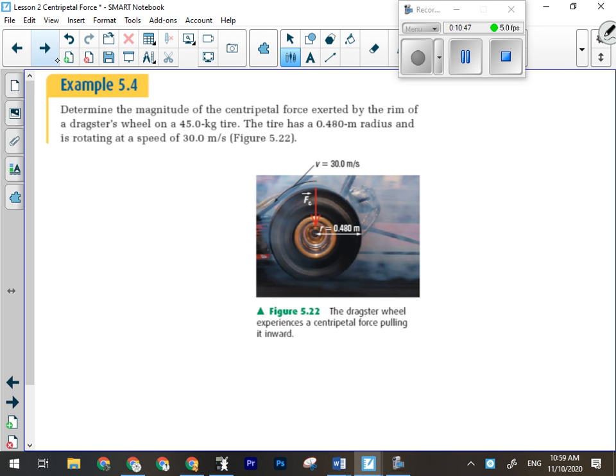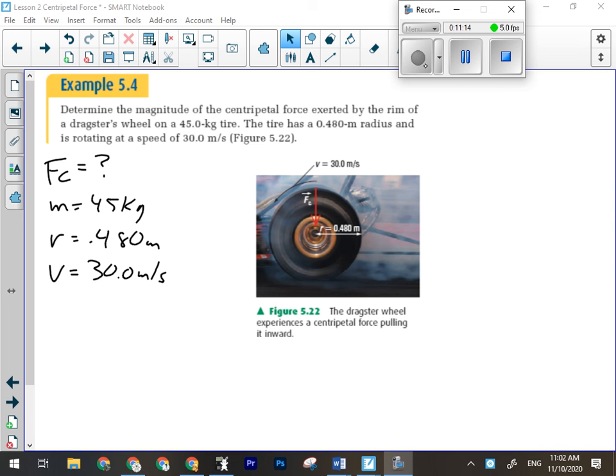Let's move on to the next one here. I want you guys to see if you can do this one. Determine the magnitude of the centripetal force. So you're looking for Fc on this dragster's wheel. It has a mass of 45 kilograms, a radius of 0.480 meters, and is rotating at 30 meters per second. So, do we have to do anything really complex here? No. We just have to fill in the formula. So we got Fc equals mv² over r. We have a 45 kilogram tire moving at 30 meters per second, which has to be squared in the formula, and we're dividing that by the radius of 0.480 meters.